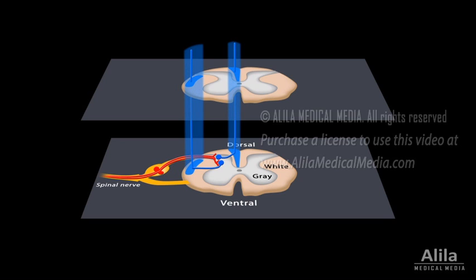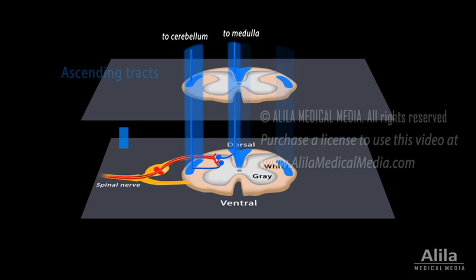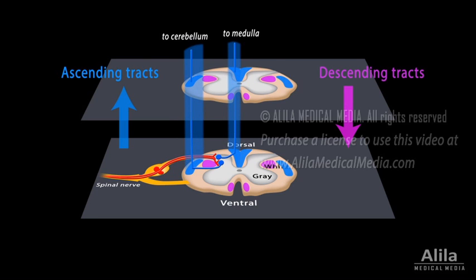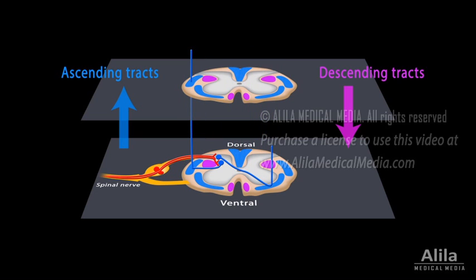Spinal tracts are essentially high-speed cables, each carrying a certain type of information in one-way traffic between the spinal cord and a certain area in the brain. All tracts occur on both sides, left and right of the cord. Ascending tracts conduct sensory information up to the brain, while descending tracts convey motor instructions down the cord. Some tracts cross over to the other side of the cord before they reach the brain, conveying sensory information from one side of the body to the other side of the brain.